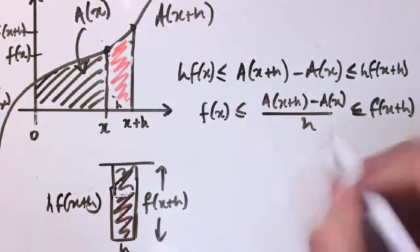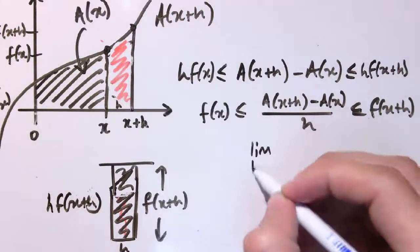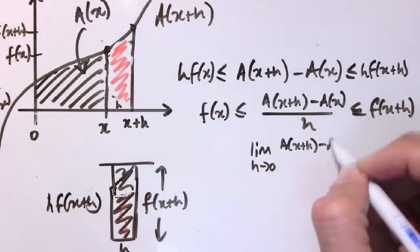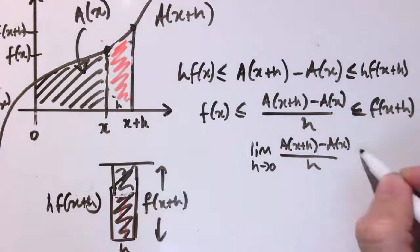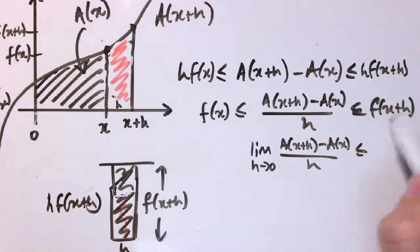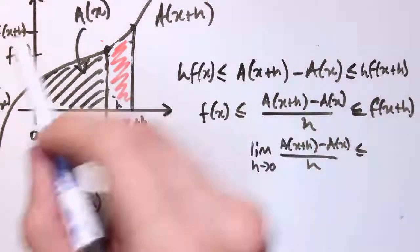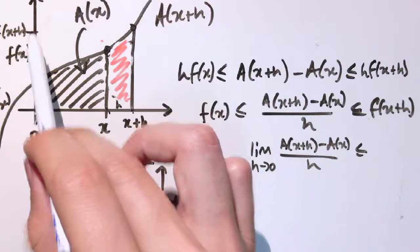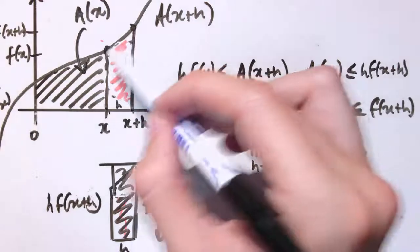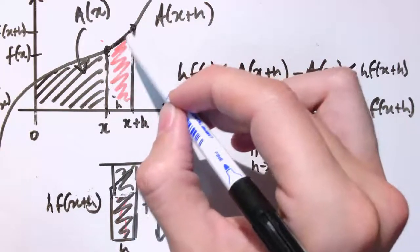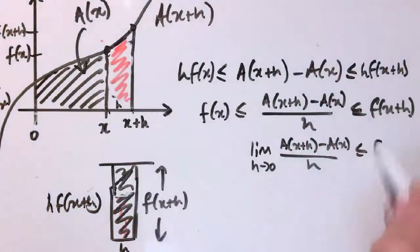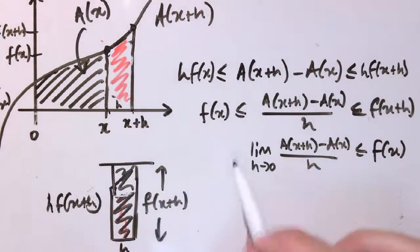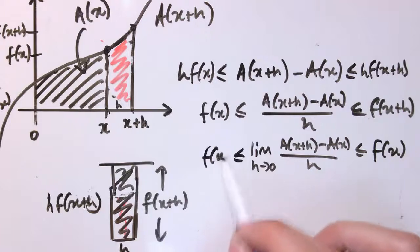Now the limit of h tends to zero of the central part. Let's do that first. I'm just going to literally write that as it is here. And this one. Now the limit of h tends to zero of f of x plus h. Well, if I make h very close to zero, then f of x plus h is just going to come down and be very close to f of x. This function is nice and smooth. So as I make h very small, it's just going to become f of x. The limit of h tends to zero of f of x. Well, there's no h in there. So that is just f of x. We don't need to do any taking of the limits.